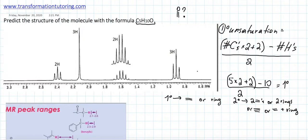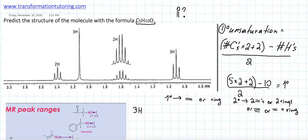Once we count the degrees of unsaturation, the next step is to write out our H-NMR chart, listing the number of hydrogens, splitting pattern, and ppm for every signal. The first signal shows three hydrogens with three peaks — that's a triplet — at about 0.9 ppm.